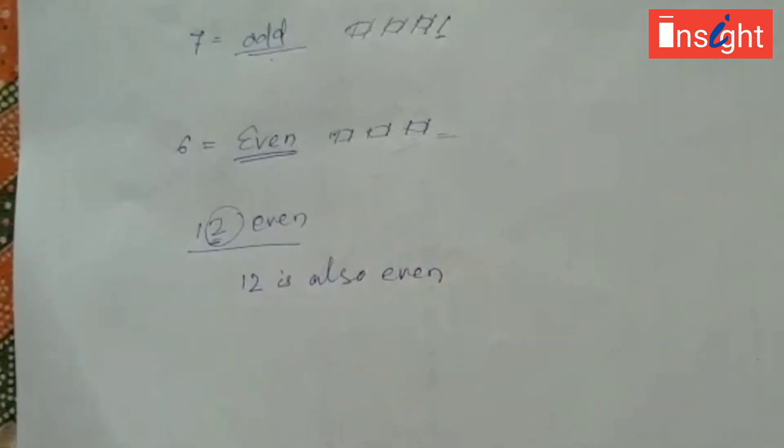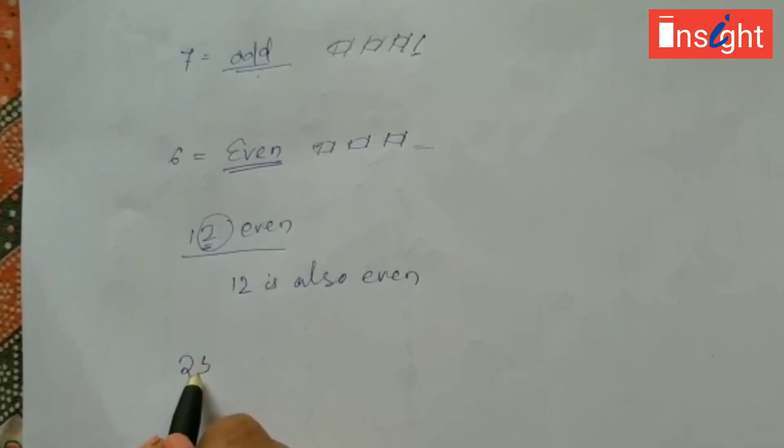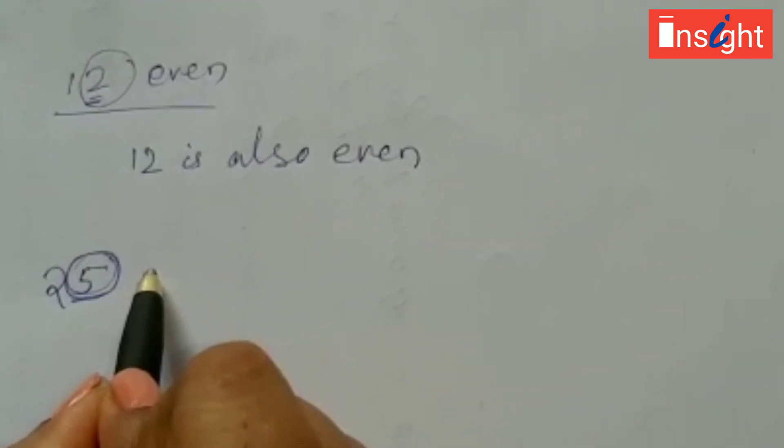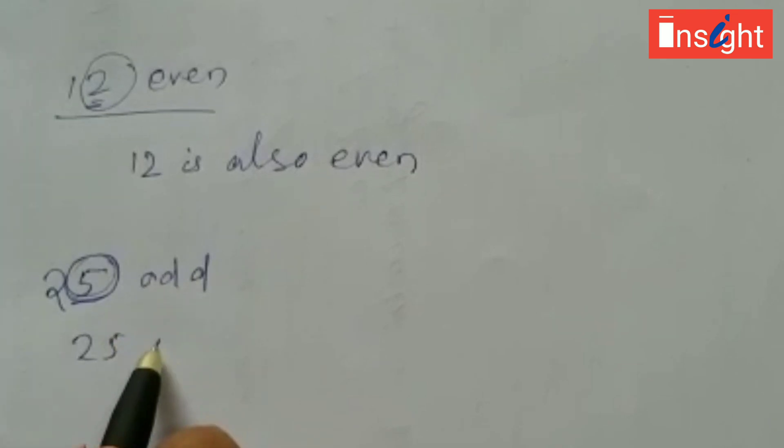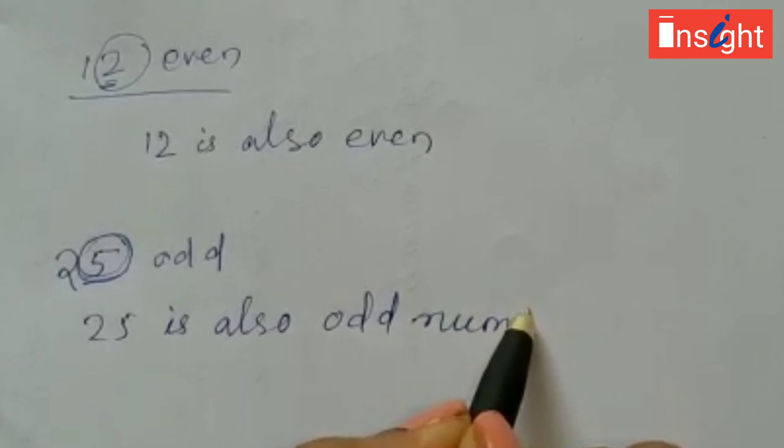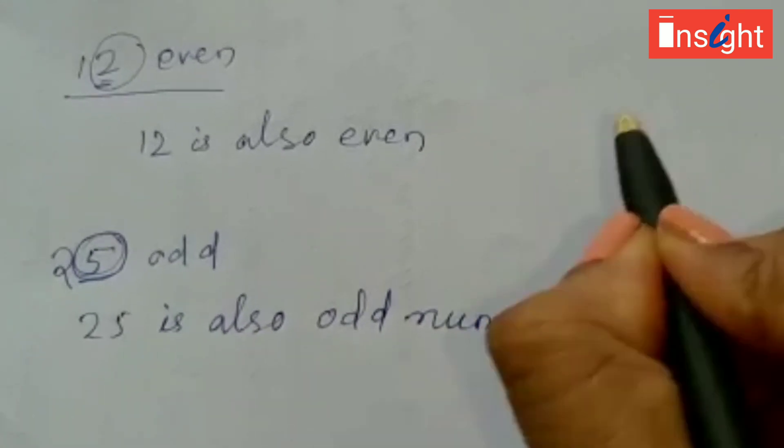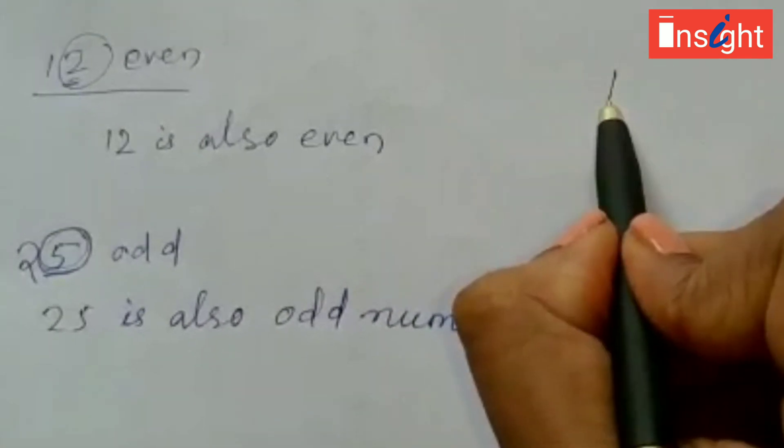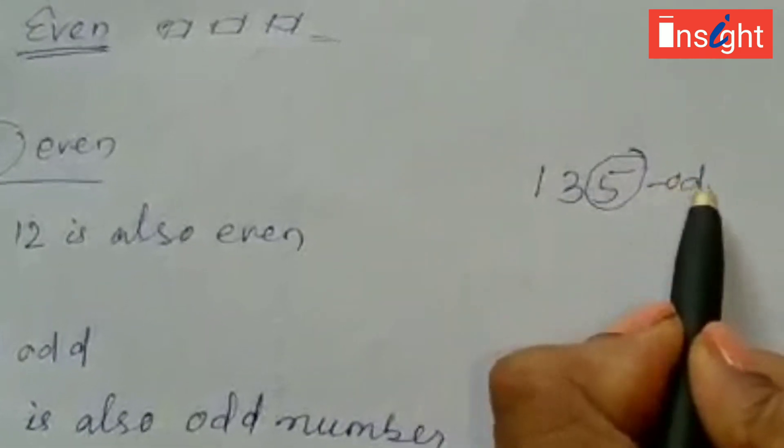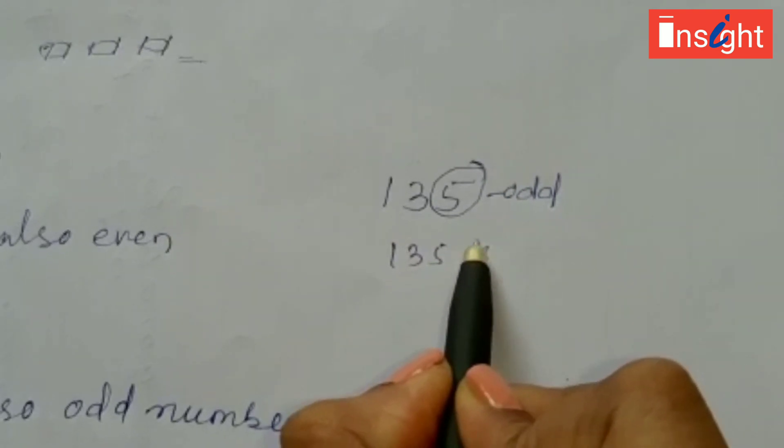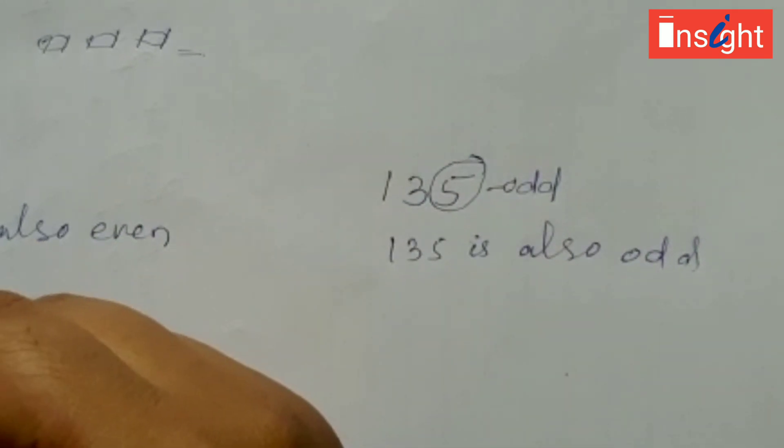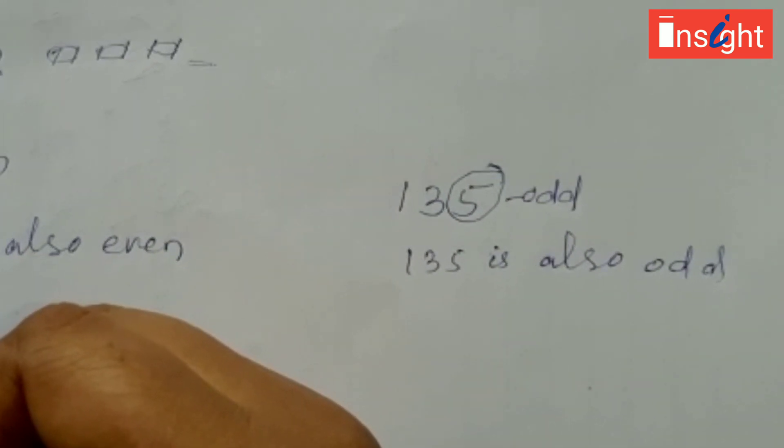In 25, the last number is five. If five is odd number, 25 is also odd number. In three digit number 135 I'm taking, last number is odd, then 135 is also odd number. Like this you can find out any number whether it is odd or even. Thank you.